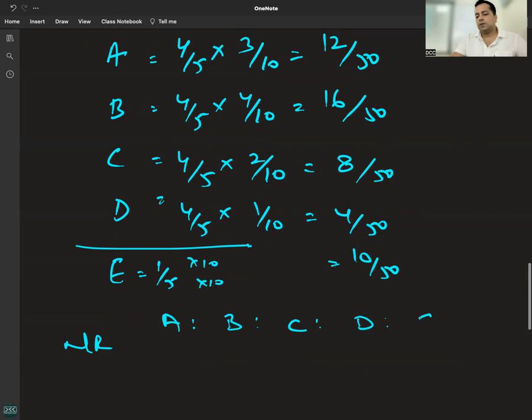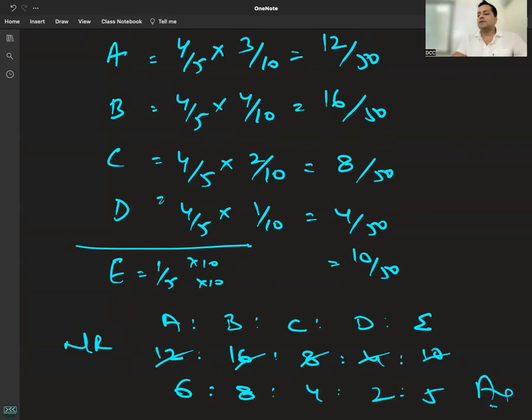The new ratio is 12:16:8:4:10. Dividing all by 2, the simplified new ratio is 6:8:4:2:5.